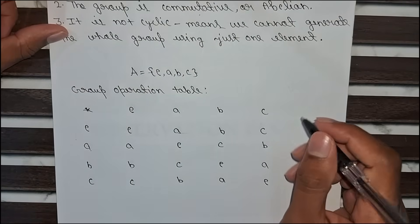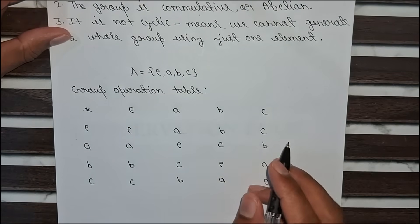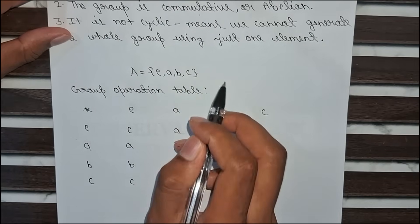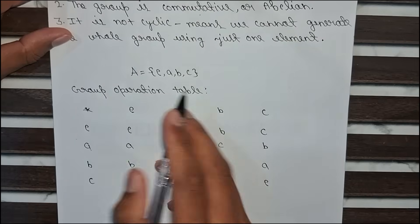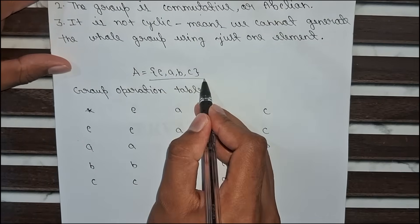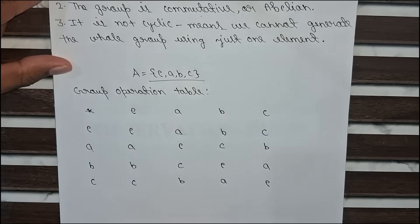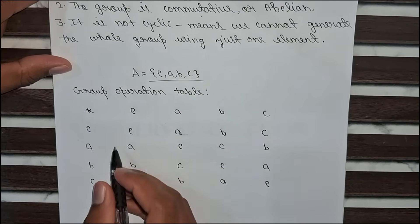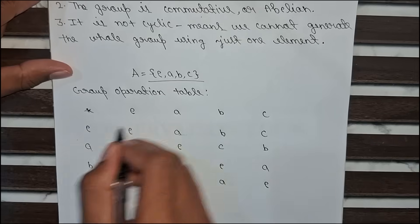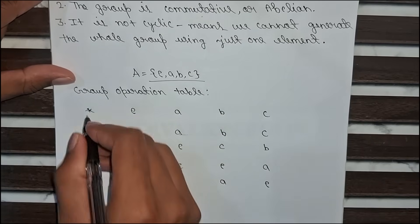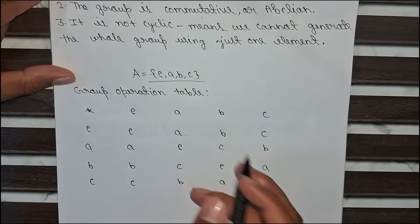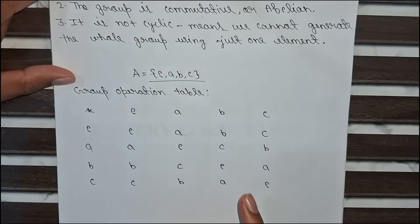Now we will go to the second part. If A = {e, a, b, c}, we have to show this is a Klein four-group. So we will apply the group operation table here. We will write all the elements horizontally and vertically, then do multiplication using all three rules above.